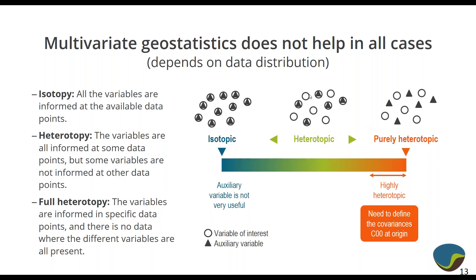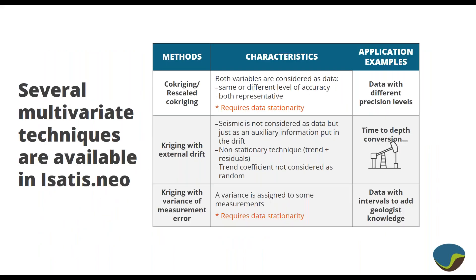The middle case of partially heterotopic data is the ideal case for multivariate geostatistics. We have some locations where both variables are defined, which allows us to use those locations to figure out what the correlation is, what the spatial behavior is, and calculate cross variograms. But we have extra locations where maybe one or the other variable is defined, and those extra locations can be used to help improve the quality of the estimate of the other variable. That's the situation we will hope to be in.